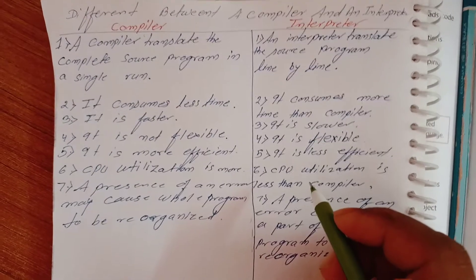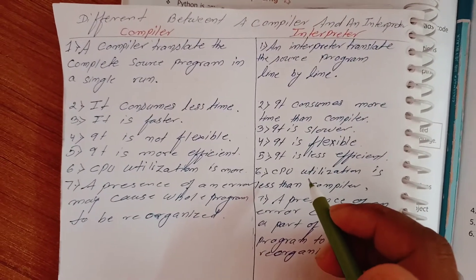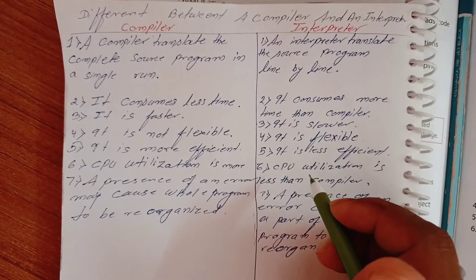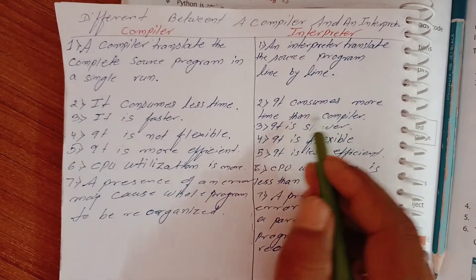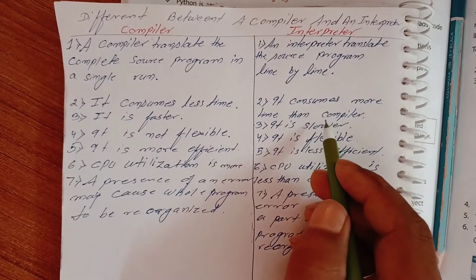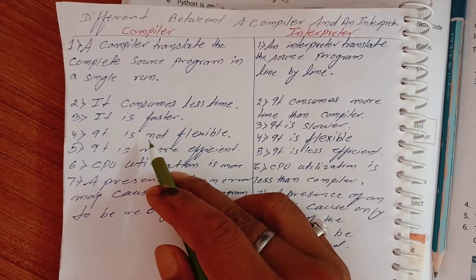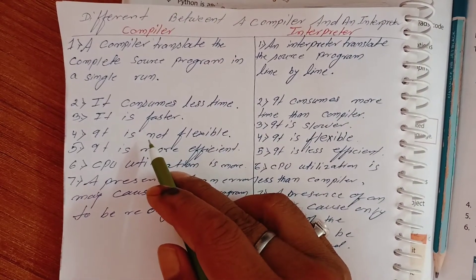Second point: compiler consumes less time and interpreter consumes more time than compiler. Next point: it is faster.